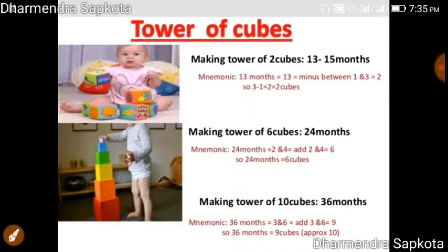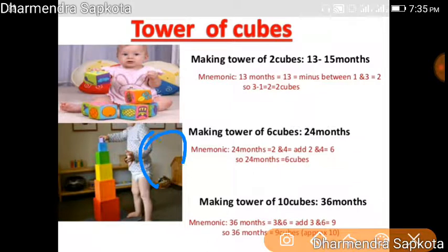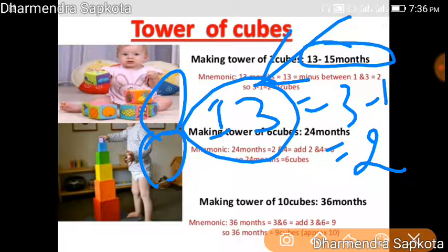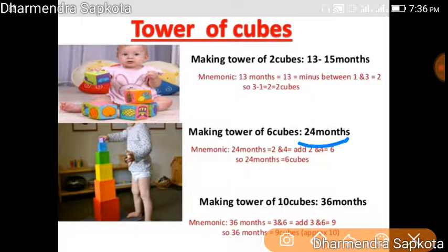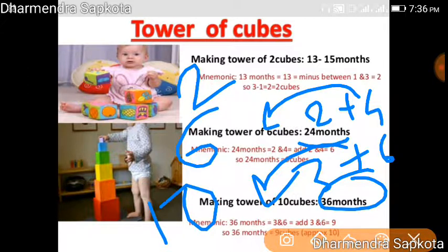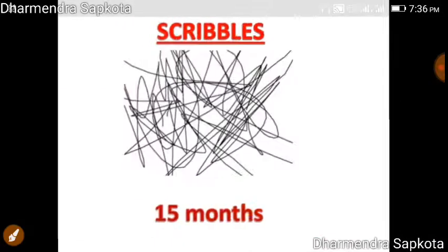Next is the tower of cubes, meaning how many cubes the child can stack. At thirteen to fifteen months, they can make a tower of two cubes — 13 means 3 minus 1 equals 2. At twenty-four months (2 years), 2 plus 4 equals 6 cubes. At thirty-six months (3 years), 3 plus 6 equals 9, approximately 10 cubes. So: 13-15 months = 2 cubes, 24 months = 6 cubes, 36 months = 10 cubes.